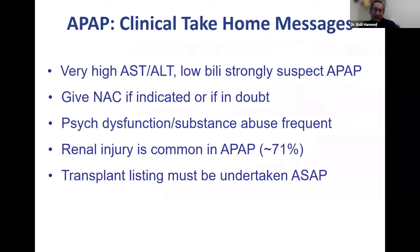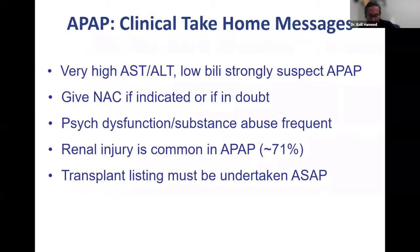Take-home messages for acetaminophen: suspect it in any patient with very high AST/ALT and low bilirubin. Give N-acetylcysteine if indicated or in doubt. Most of these patients in the U.S. have underlying dysfunction or substance abuse. Renal injury or acute tubular necrosis is very common in acetaminophen overdose — up to 70%. In the U.S., these patients should be managed in a liver transplant center, because if they are not getting better, they will need liver transplantation.